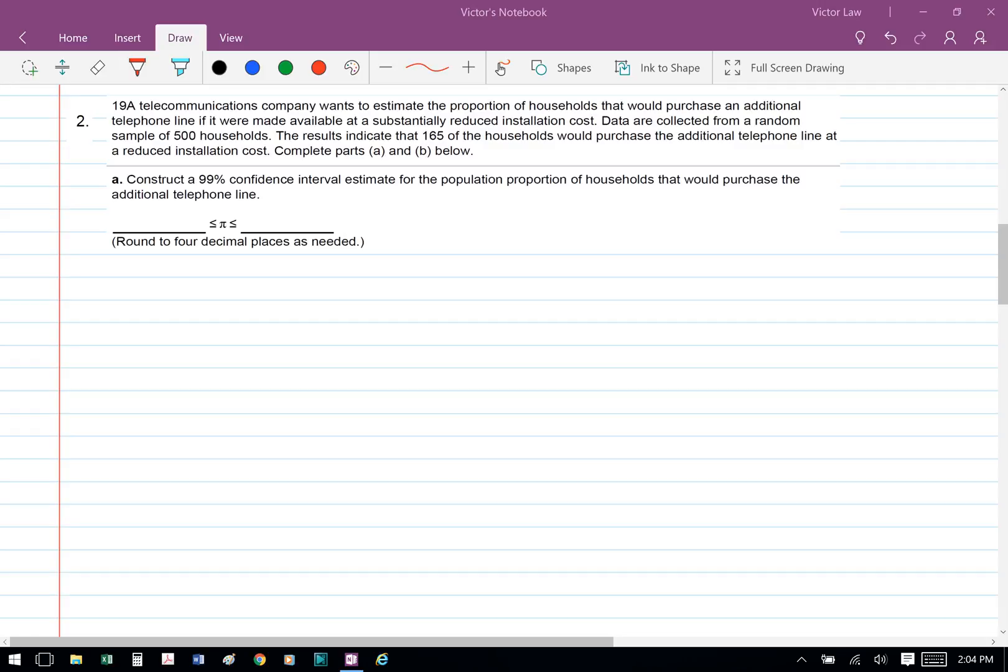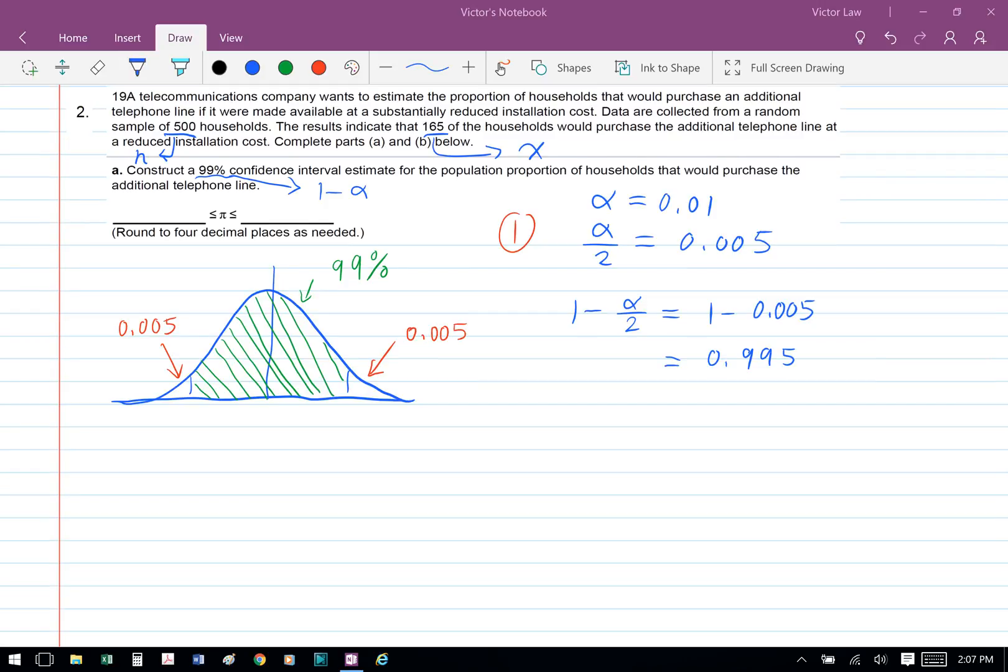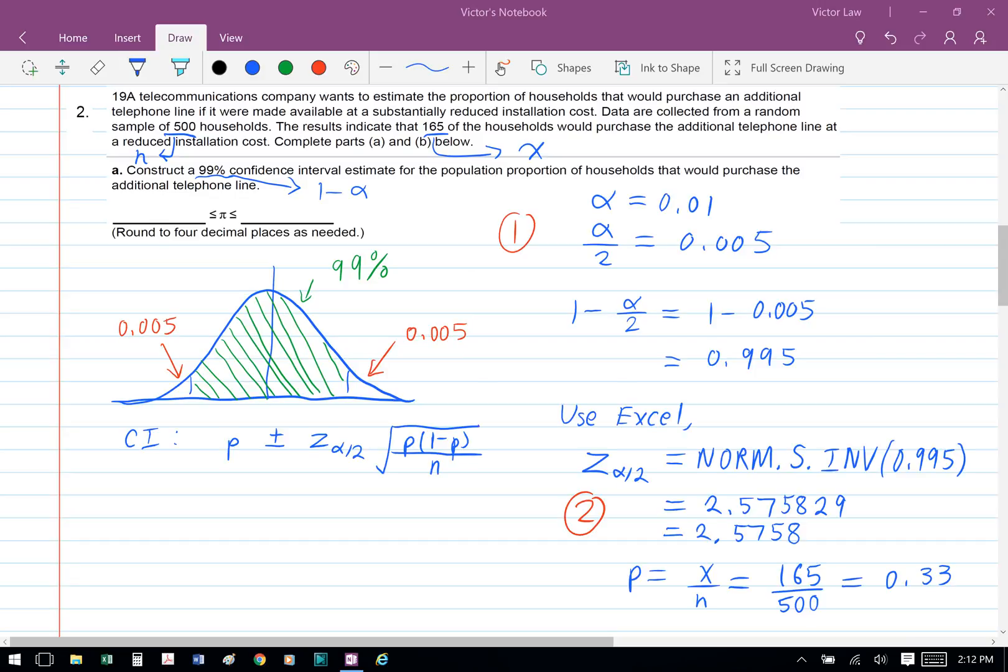Construct a 99% confidence interval estimate for the population proportion of households that would purchase the additional telephone line. So we're looking for a 99% confidence interval, so we have 99% in the middle, and therefore each side on the left and the right has 0.5%.